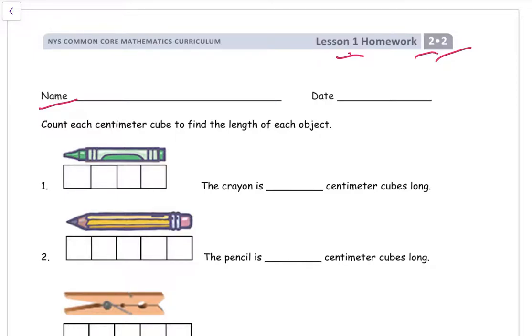Count each centimeter cube to find the length of each object. So we have a picture of a crayon here and these boxes underneath are drawings of a centimeter cube and you just count them. One, two, three, four. The crayon is four centimeter cubes long.